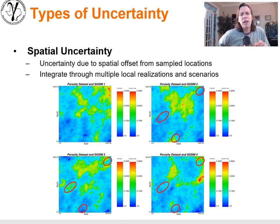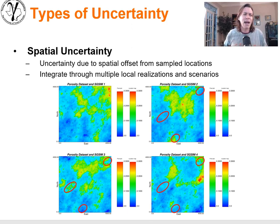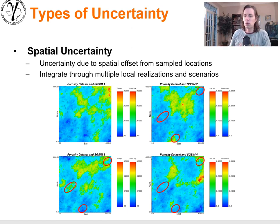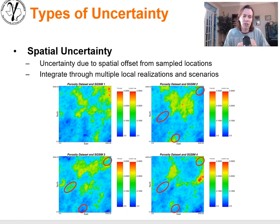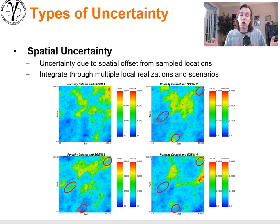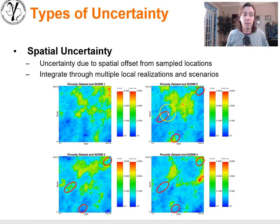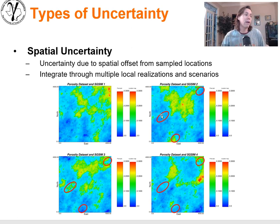The second source is spatial uncertainty. Even if we know perfectly what's going on at the well location, we still don't know what's going on between the wells. Even if we know exactly the scenario — whether it's channels, lobes, or some diagenetically altered reworked system — and we know what's happening at the data points, we do not know exactly what's going on between the data. That is spatial uncertainty: the problem of estimating away from the data locations.